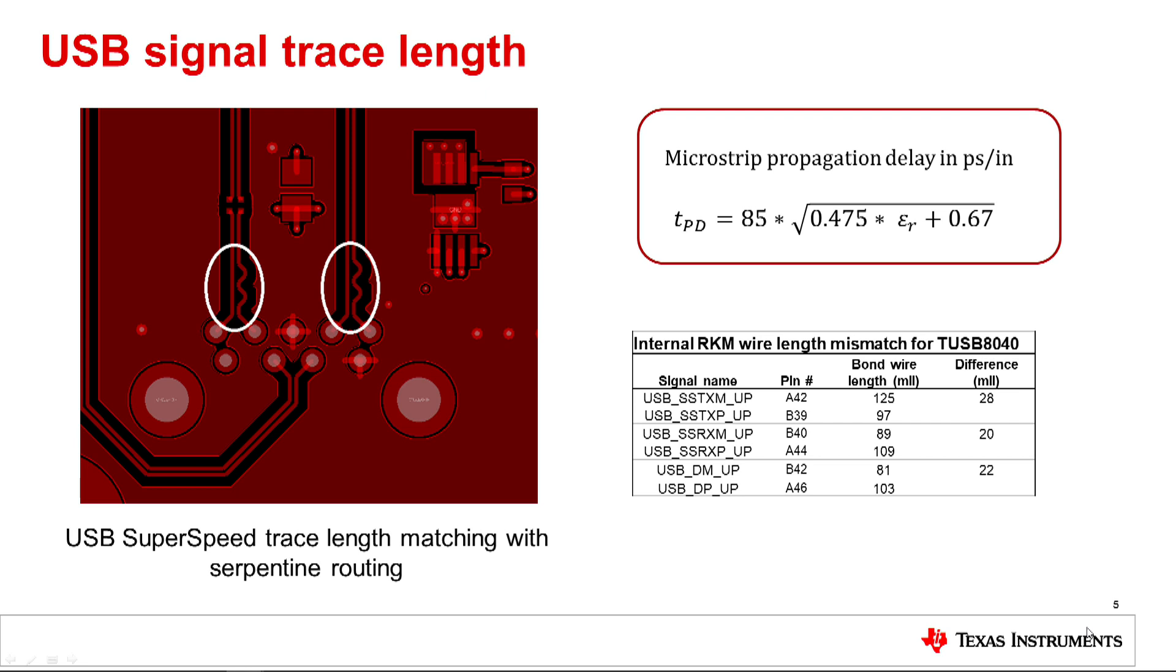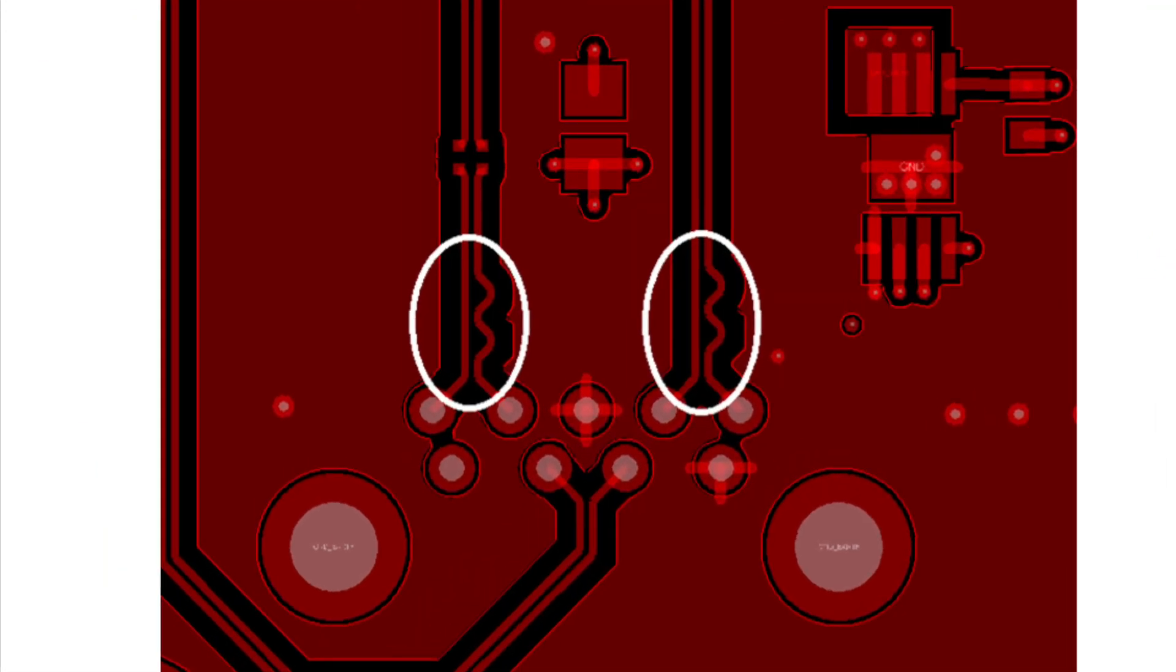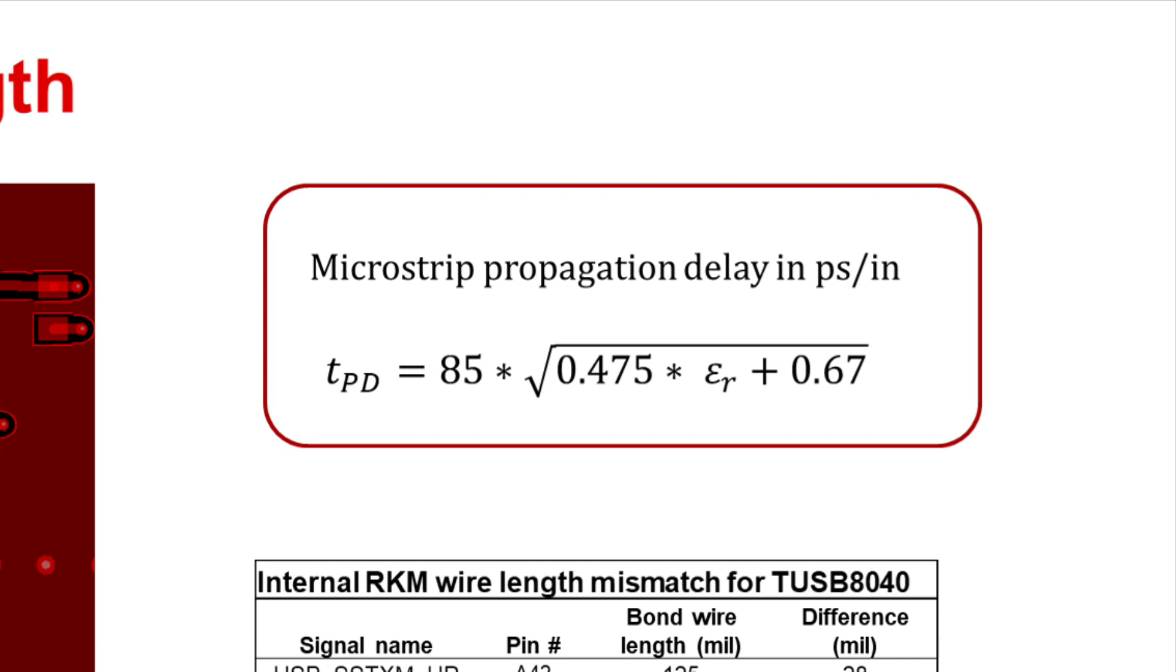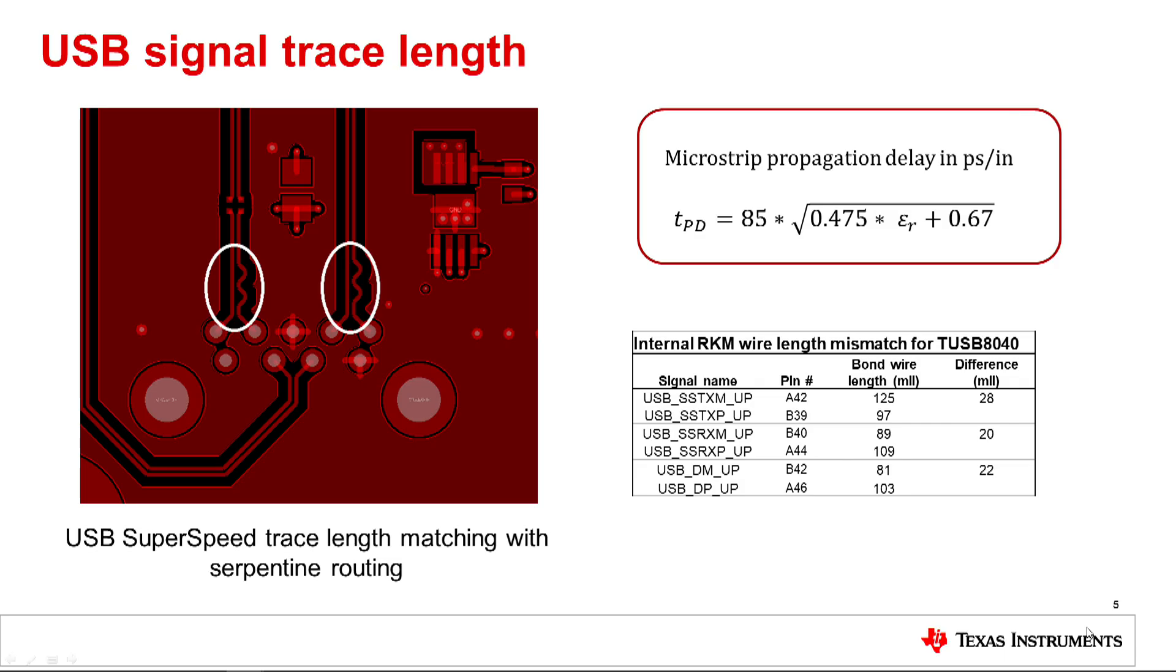When matching the routing lengths of the USB signals, it is possible to add serpentine routing to match the lengths as shown here. Serpentine routing should be grouped with any other discontinuities in the trace routing or at the connector. Mismatched signals will have a slightly different timing due to propagation delay. A rule of thumb for propagation delay in PCBs is 165 picoseconds per inch. The exact formula for microstrip propagation delay is shown here and yields a value slightly lower, about 140 picoseconds per inch. This equals about 20 to 25 picoseconds for 150 mils of mismatch.